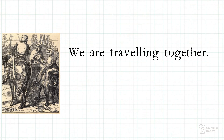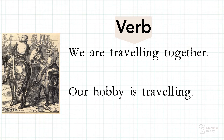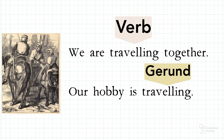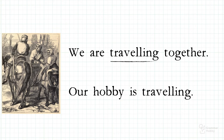We are traveling together. Here, traveling originally functions as a verb. Our hobby is traveling. But here, traveling functions as a noun, or a gerund. Observe the two sentences carefully. Traveling in the first sentence tells about the action that the travelers do — we are traveling together. On the second sentence, traveling is more of an idea that they know — our hobby is traveling. That's the difference between a gerund and a verb.